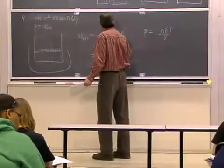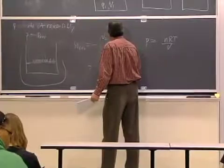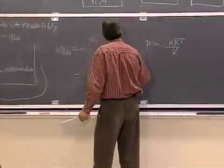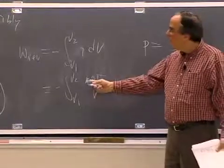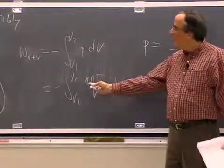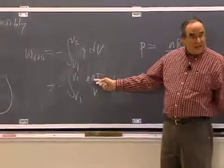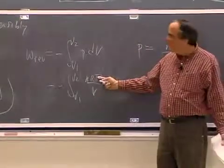We have minus V1 to V2, nRT over V, dV. These are all constant. It's isothermal. We can take them out. It's a closed system, so the number of moles doesn't change. The ideal gas constant doesn't change. Temperature doesn't change.